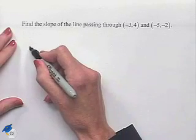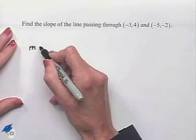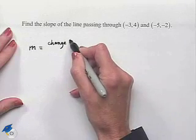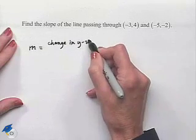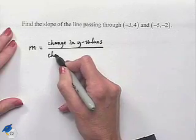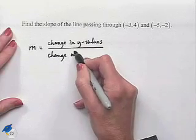Let's recall that we can abbreviate slope using the symbolism M. That's going to equal the change in our y values divided by the change in our x values.